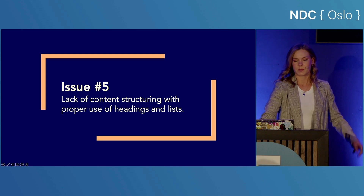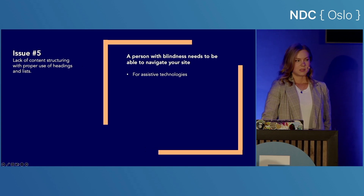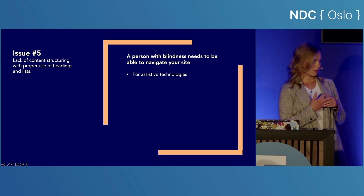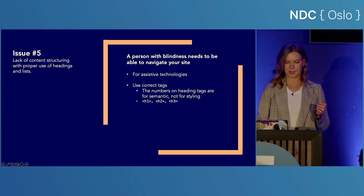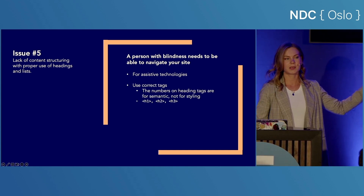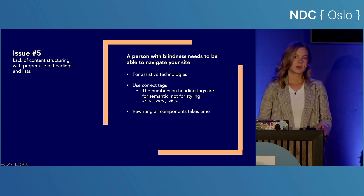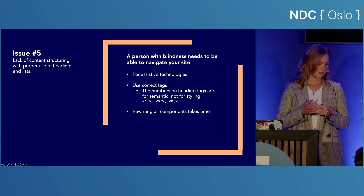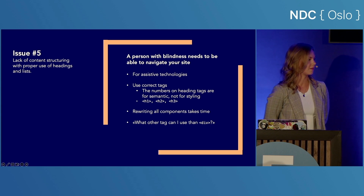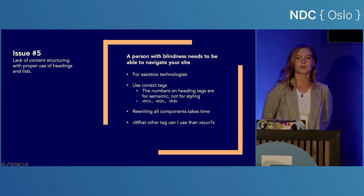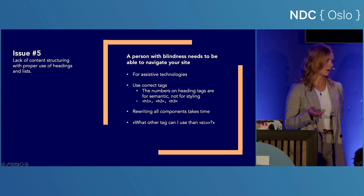Issue number five: lack of content structuring with proper use of headings and lists. For assistive technologies to work optimally, the web app needs to be written with the correct tags, especially the right use of heading tags. The different heading numbers are for semantic meaning, not for styling as many people use them. It's important to begin building the web app with appropriate tags from the very beginning because rewriting it will take time. My best tip is: every time you want to use another div, try to think of another tag to use — you can use nav for navigations or p for paragraphs, etc.